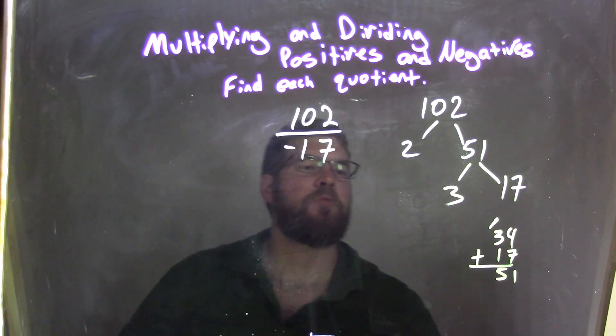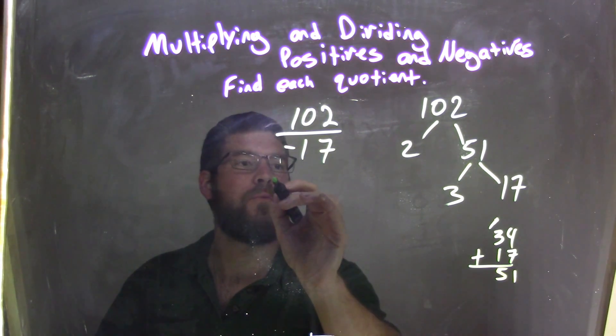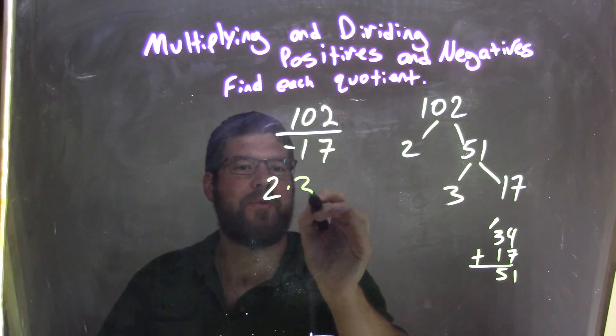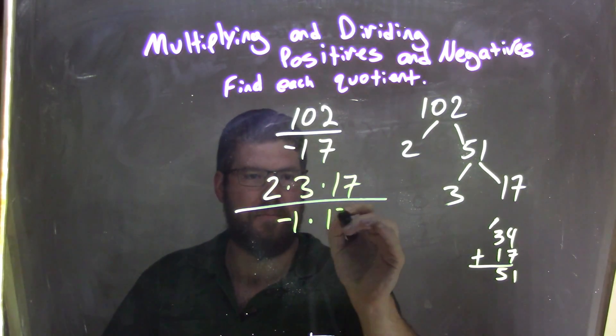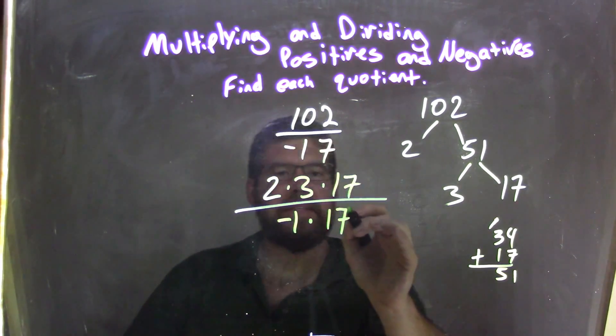It's kind of breaking down and thinking about it. So now 102, I can rewrite to be 2 times 3 times 17. And negative 17, I can write as negative 1 times 17. Well, the 17s cancel.